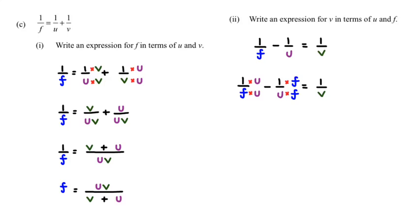Putting this together, we get u/fu - f/fu = 1/v. Since the denominators are the same, we can combine them: (u - f)/fu = 1/v.